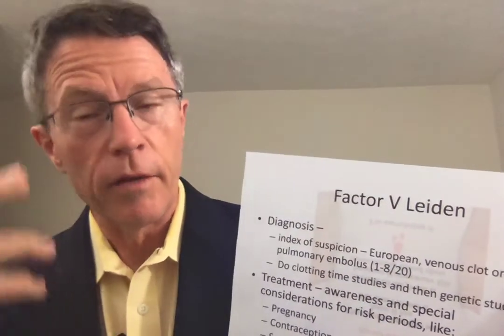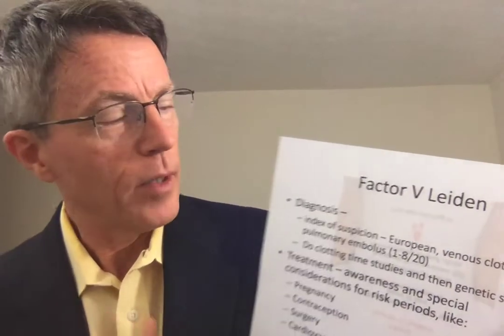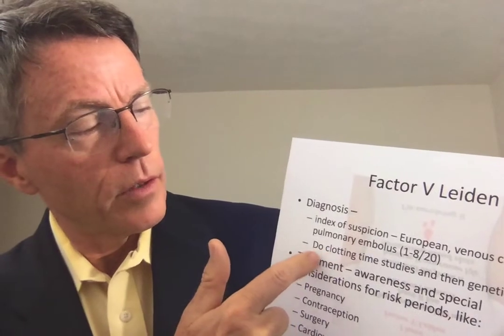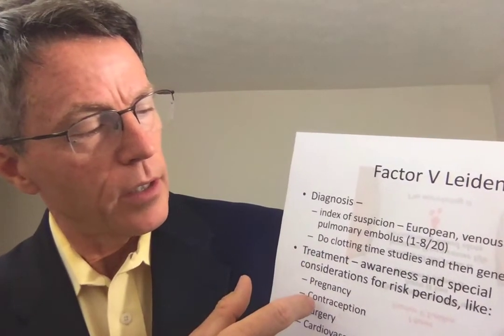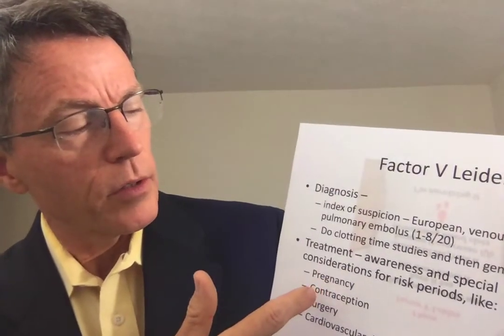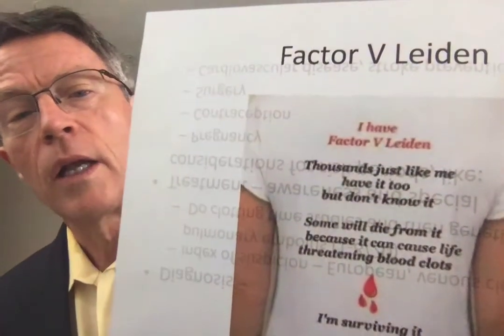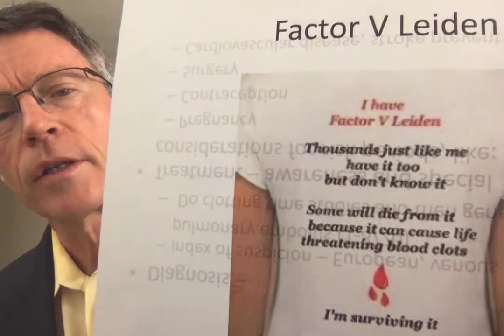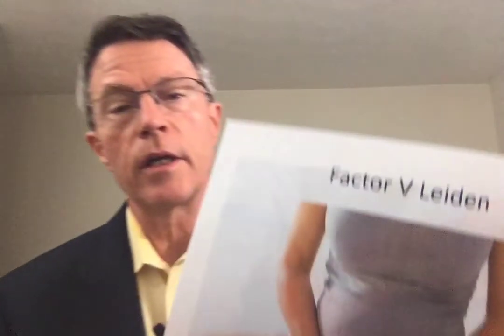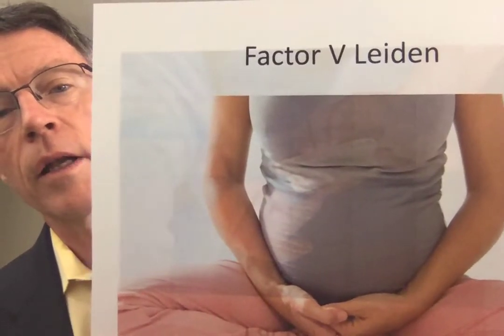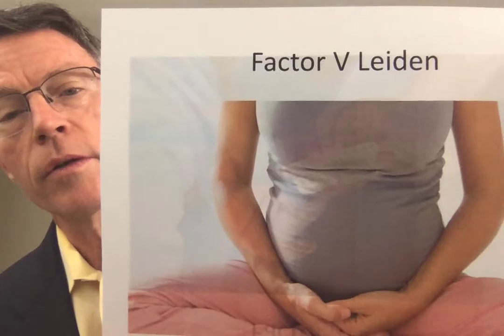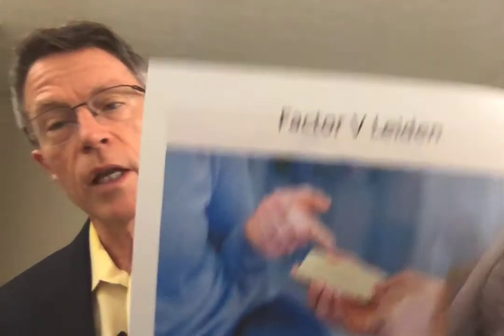When that happens, if you've got a sharp doctor — though many doctors are not thinking about that — they'll do clotting studies and then look for this with genetic studies. What do you do for it? You have awareness and special considerations for high-risk periods such as pregnancy, contraception, surgery, and cardiovascular disease. If you're going to have surgery, this patient needs to say, 'I'm aware,' so they can avoid a problem. With oral contraceptives, if you're thinking about going on the pill, it would be helpful to know.